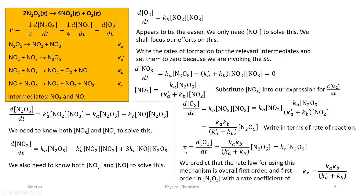Writing in terms of the rate of reaction — which is directly equal to the net rate of formation of O2 — we obtain our rate law. The overall experimentally observed rate coefficient is the ratio of Ka to (Ka' plus Kb). According to this mechanism, the rate of reaction is overall first order, and first order with respect to N2O5.